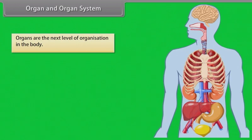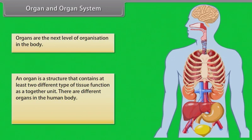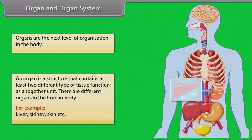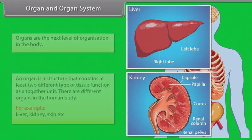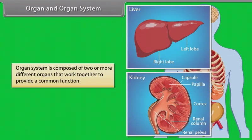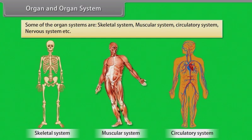Organ and organ system. Organs are the next level of organization in the body. An organ is a structure that contains at least two different types of tissue functioning together as a unit. There are different organs in the human body, for example liver, kidney, skin, etc. An organ system is composed of two or more different organs that work together to provide a common function. Some of the organ systems are skeletal system, muscular system, circulatory system, nervous system, etc.